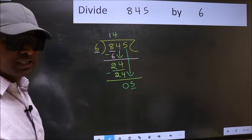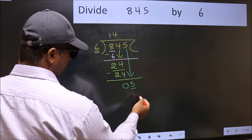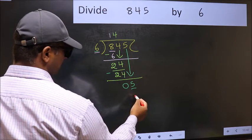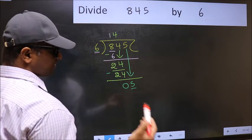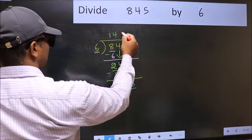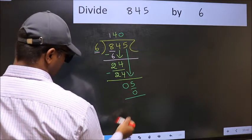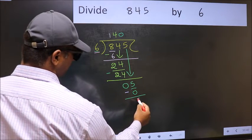Instead, what you should think of doing is, what number should we write here? If I take 1, I will get 6, but 6 is larger than 5. So what we should do is take 0. So 6 into 0, 0. Now you should subtract. 5 minus 0, 5.